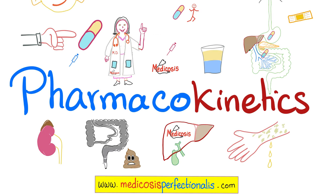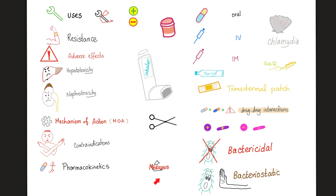If you have studied physics before, you will recall that kinema means motion. Here are the Medicosis symbols for pharmacology. This symbol means the clinical uses of the medications. This symbol means the side effects or adverse effects of the medication. And this symbol means resistance — for example, the bacteria can resist your medication, rendering it ineffective.